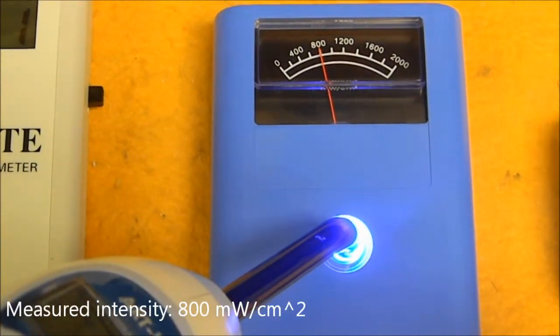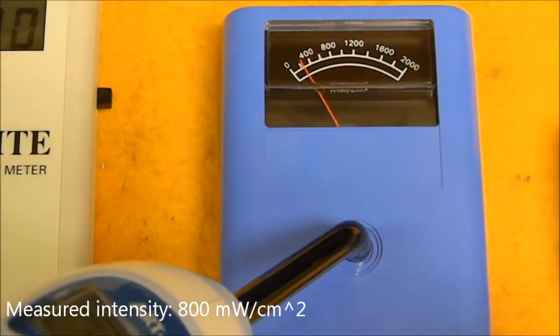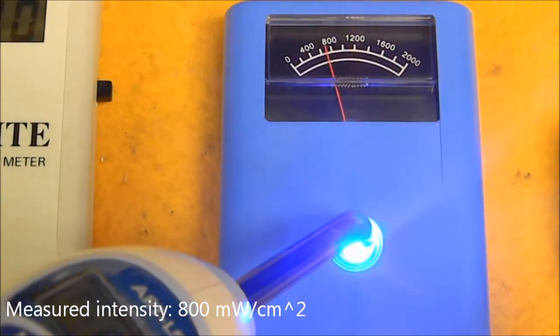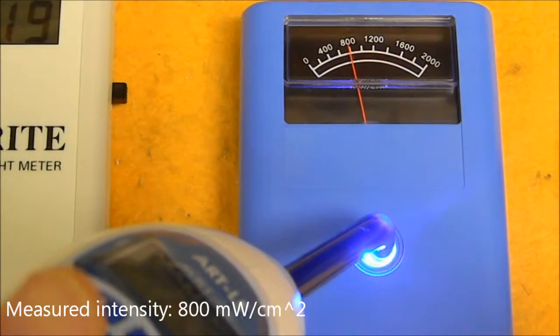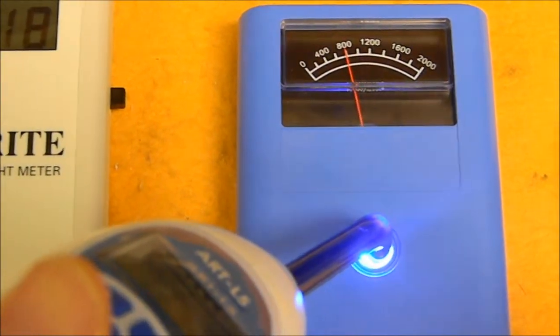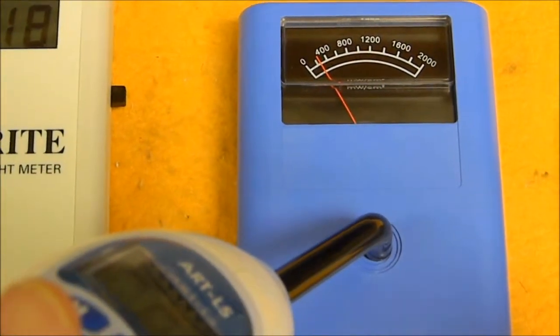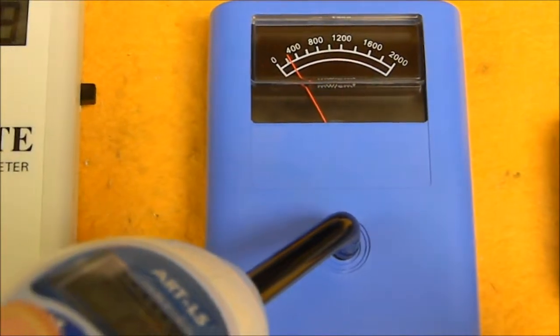As you can see, we have a power reading discrepancy of around 1000 milliwatts per centimeter squared. While a reading of 800 is considered high output by this particular radiometer, it is a drastically different reading than what is provided by either the Mark system or the Densply unit.